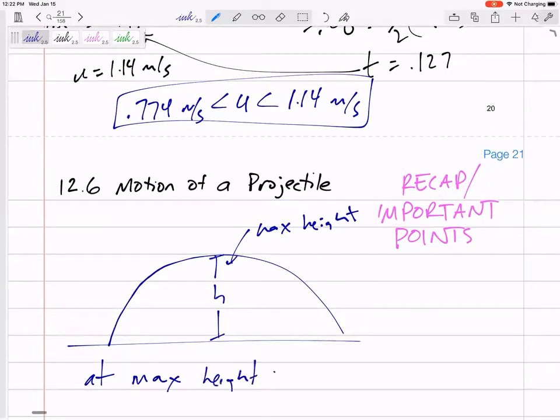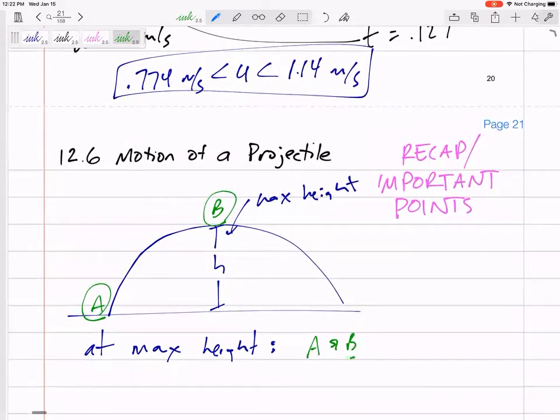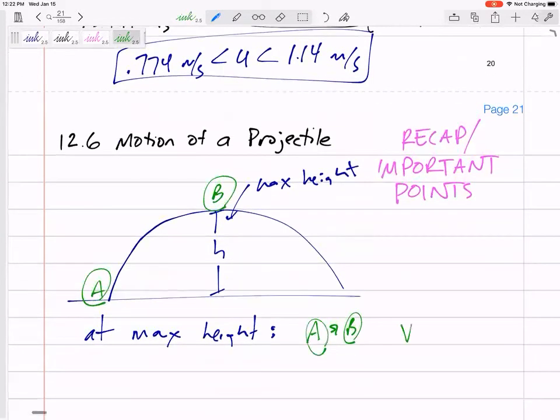At maximum height, so maybe we're going from A to B. I want to find out what's that maximum height. From A to B, I'd probably use B.